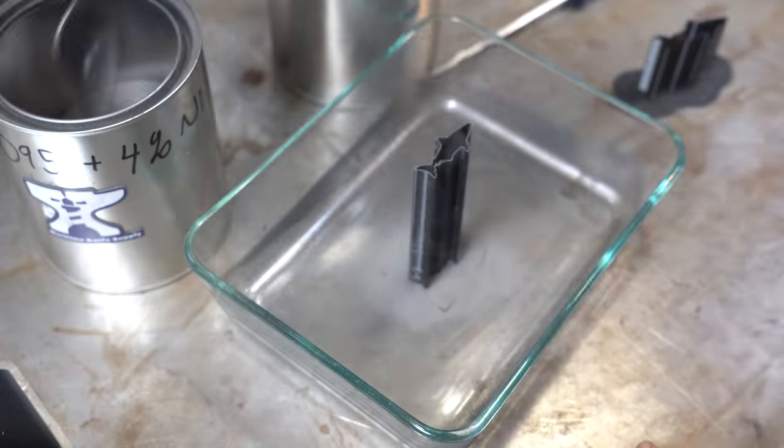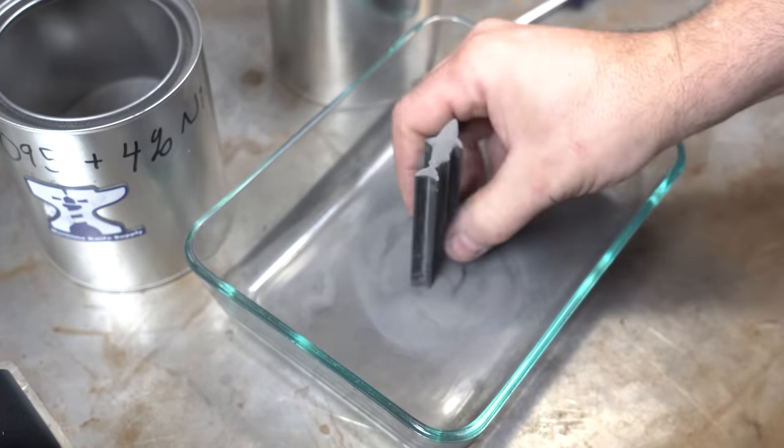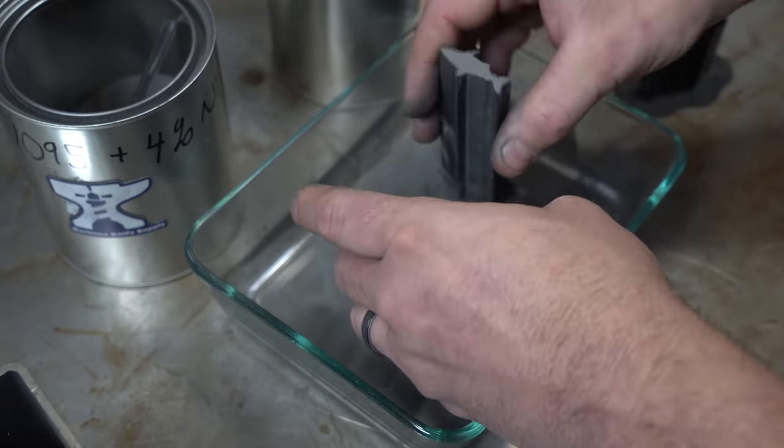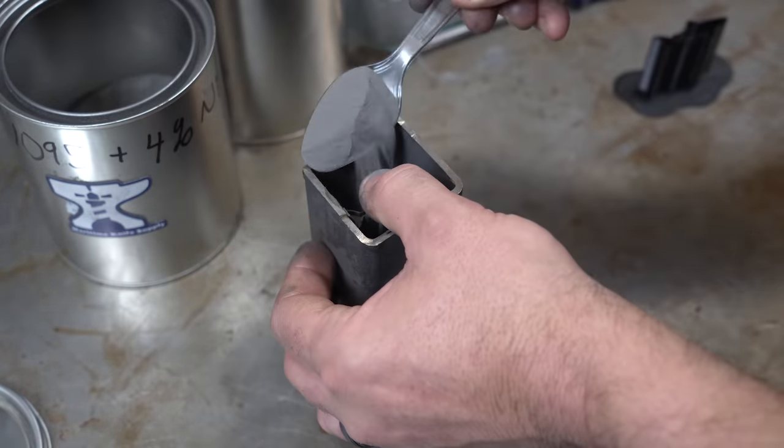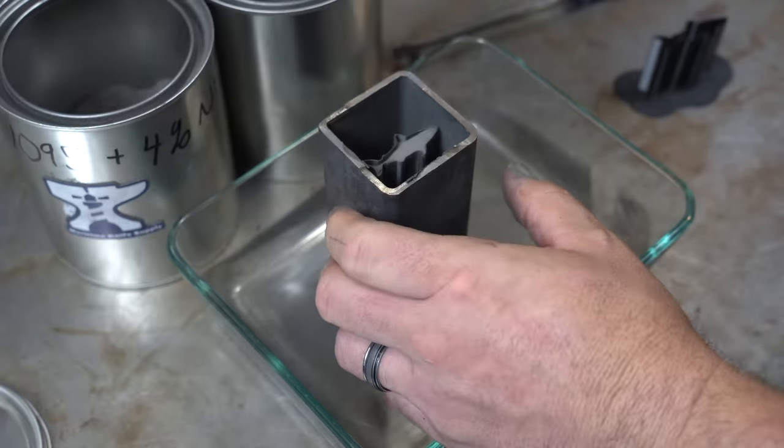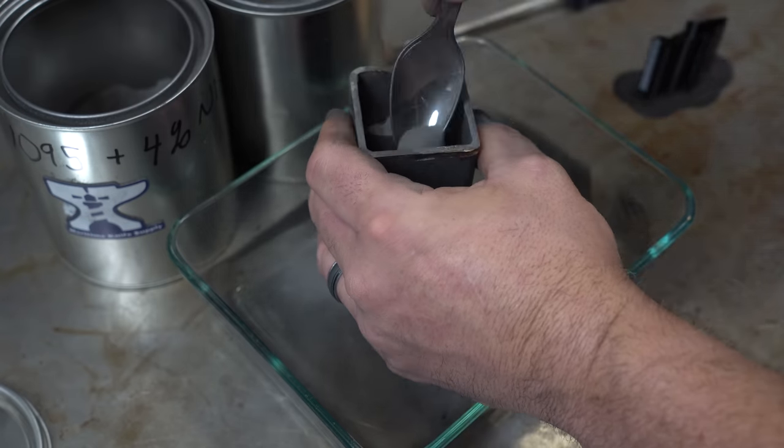I decided it would be easiest to put the mold in this glass dish so I wouldn't lose any of the powder that fell out, then just move the whole thing. That worked out really well. After that, I just filled the outside with the 1095 powder. And then you have to vibrate it just to get it all to settle and add a little more. This worked out really easy.